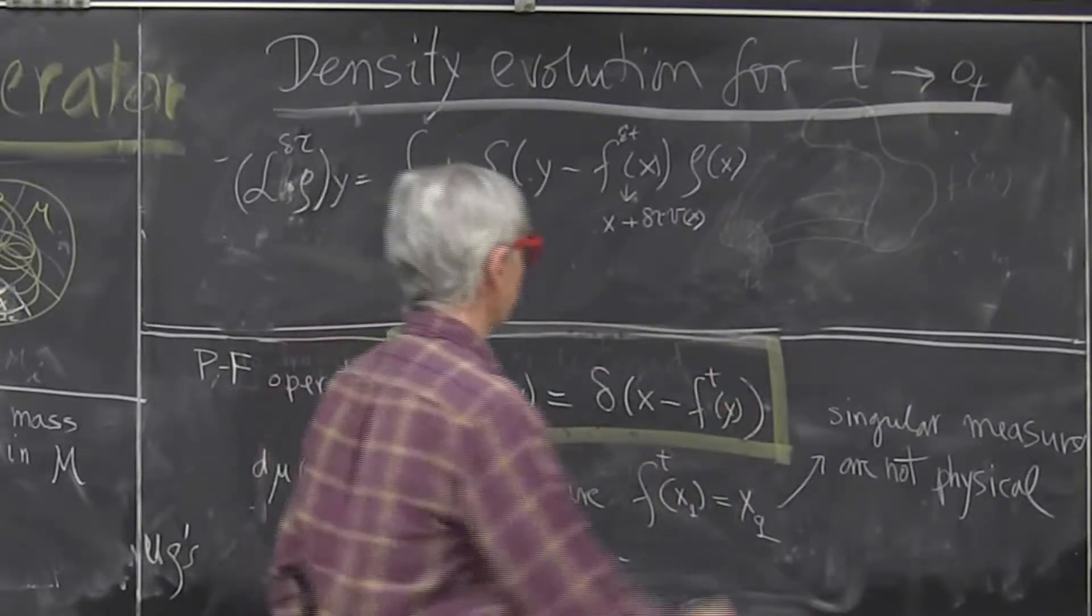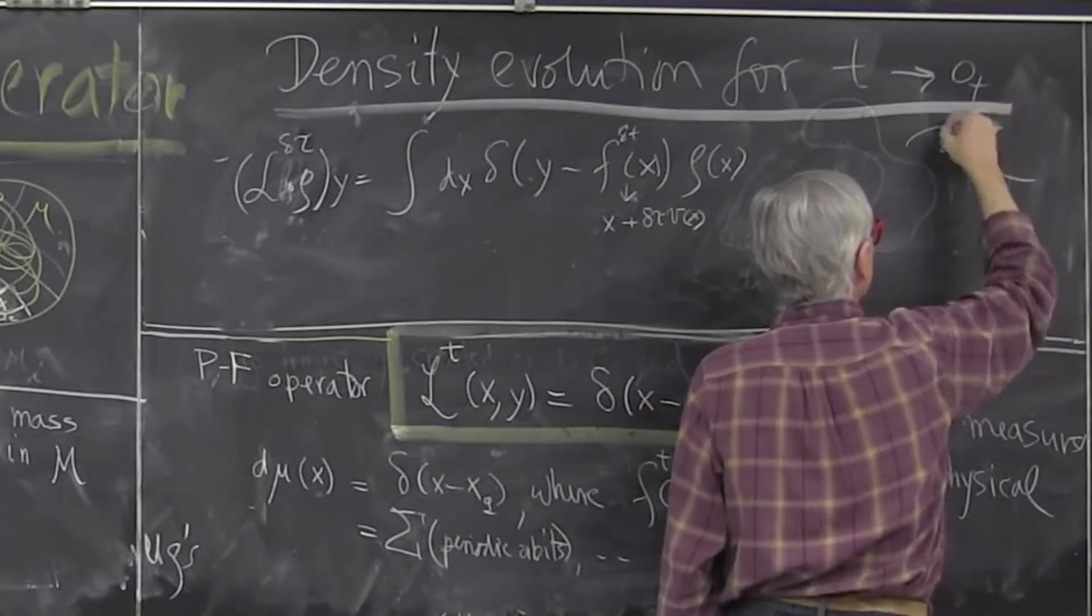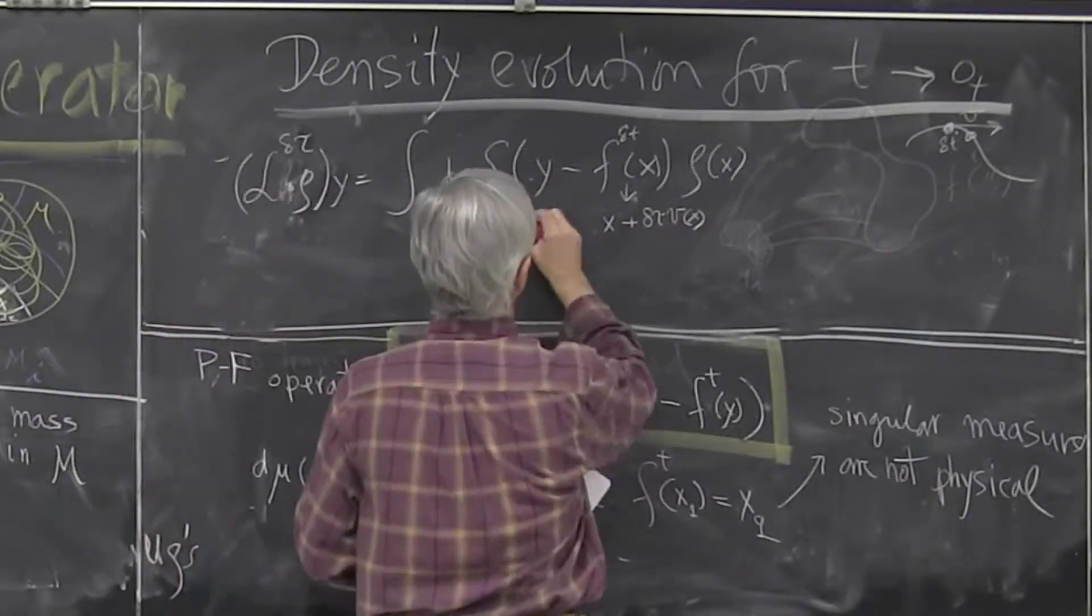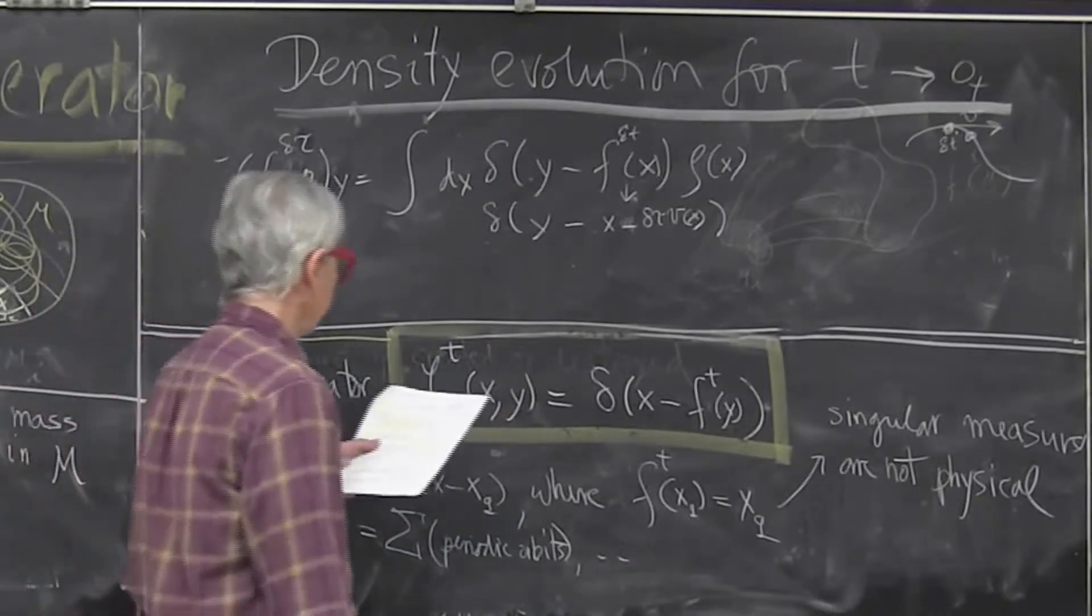That's just linearization of trajectory. This is velocity, and a little time you produce the length in this way. That's a delta function, so you can integrate.